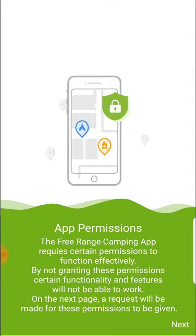Now, the reason you need these permissions is if you want full functionality of the app — that includes your location, and also if you want the ability for the offline caching to work correctly — you're going to need to give the app these permissions.